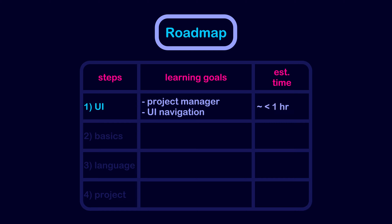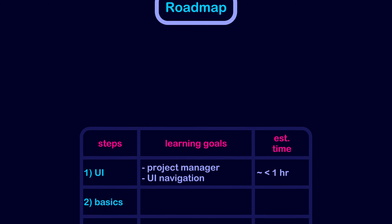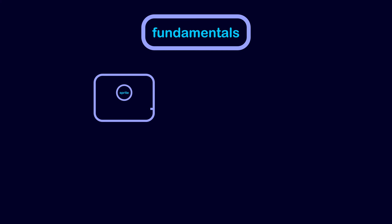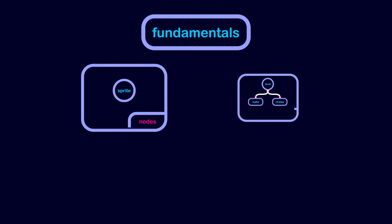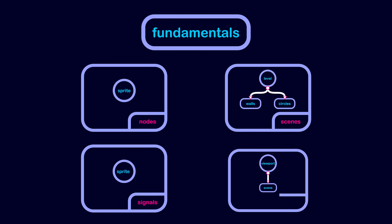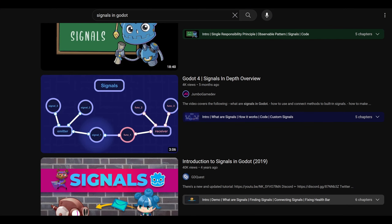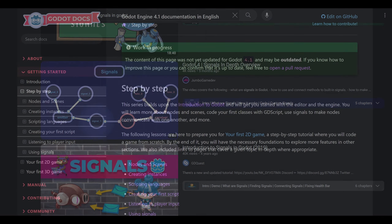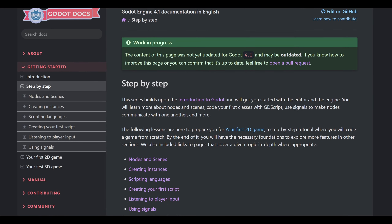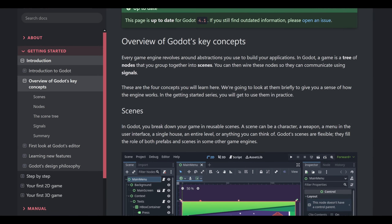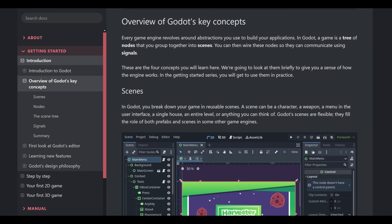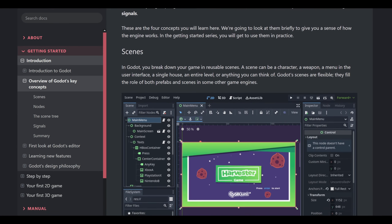The second step is where the real learning begins. In this step, you need to learn all the fundamental concepts of Godot. This includes concepts like nodes, scenes, signals, and the scene tree. You can watch videos or read the step-by-step section and the 'Overview of Godot's Key Concepts' section in the documentation.